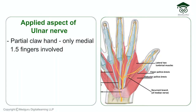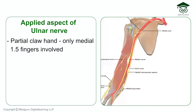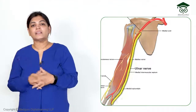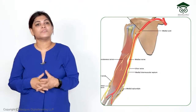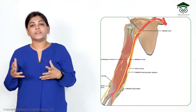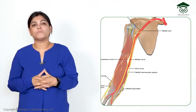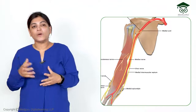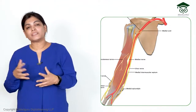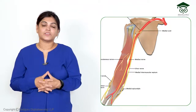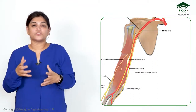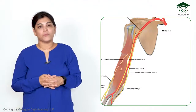There is partial claw hand in ulnar nerve injury involving only the medial one and a half fingers. Complete claw hand occurs when both the median and ulnar nerves are injured. The ulnar nerve is also called the 'magician's nerve' and the funny nerve, related to the tingling sensation at the medial epicondyle — which is also called the funny bone.